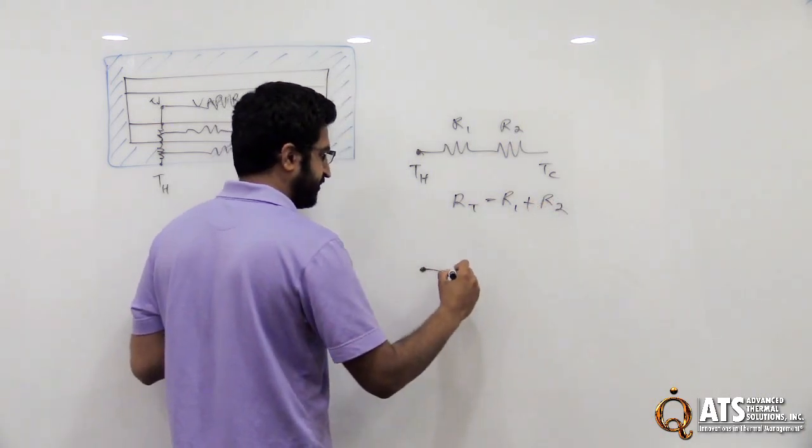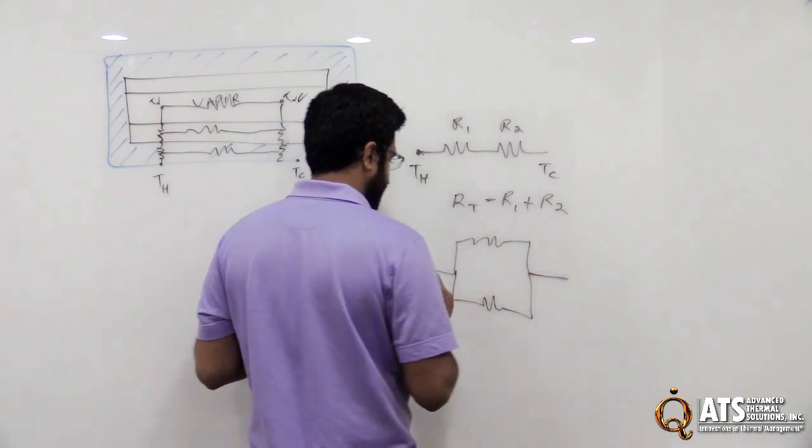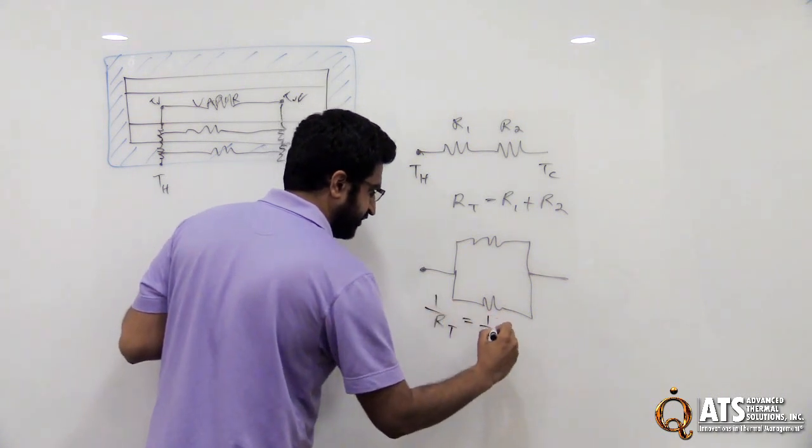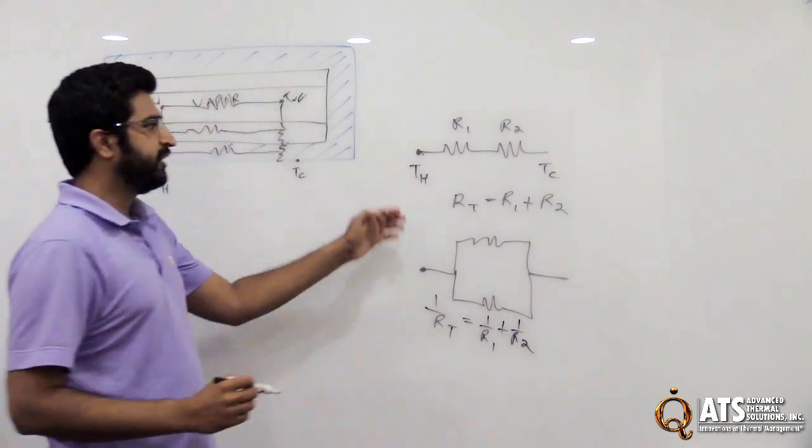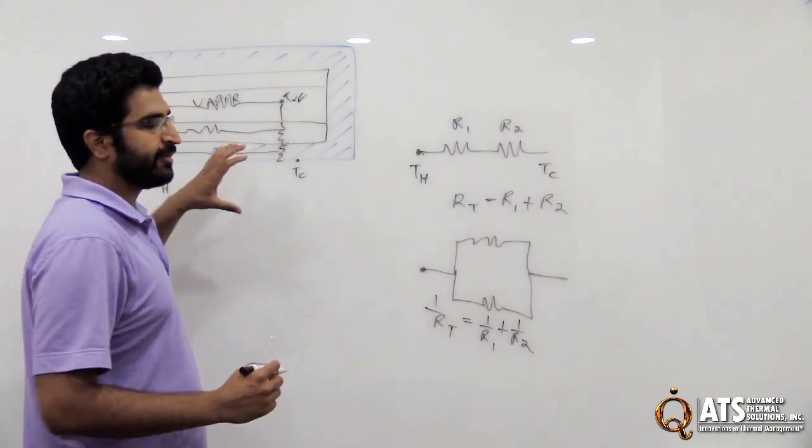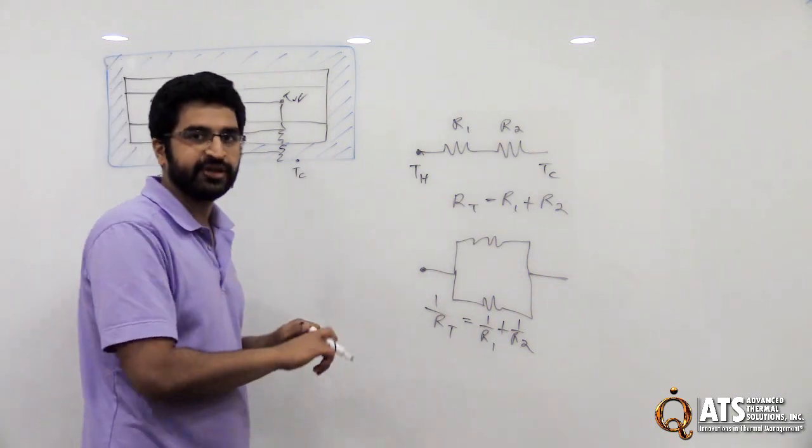If, for instance, they were in parallel, then the total would be 1 over RT is 1 over R1 plus 1 over R2. So you have to use a combination of these and we'll use that to basically come up with a final version of the equation that includes all of the resistors together.